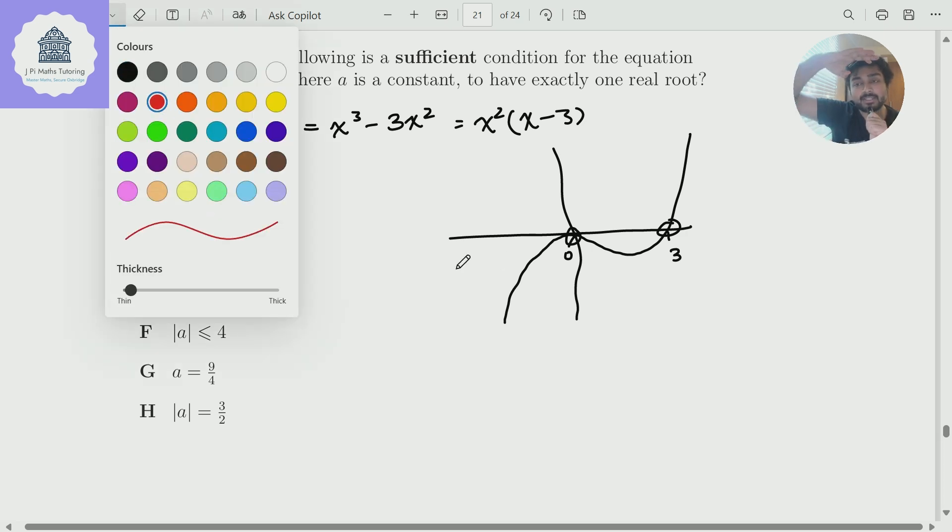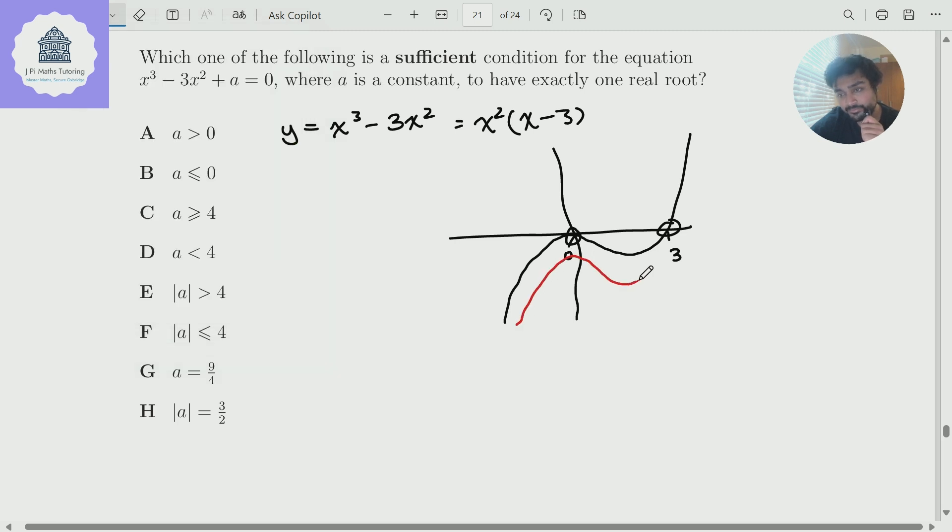We could either vertically translate this downwards. And if I do that by any amount, I can see that now this will only have one real root somewhere over here, because this maximum turning point will go down slightly. And so we'd only have one point where it crosses the x-axis. So that tells me that a can be any negative number and this cubic will have only one real solution.